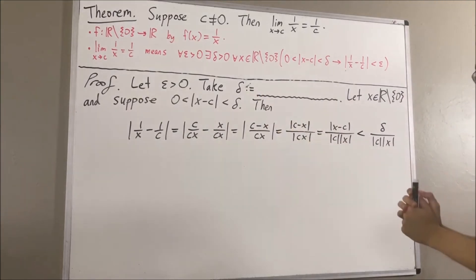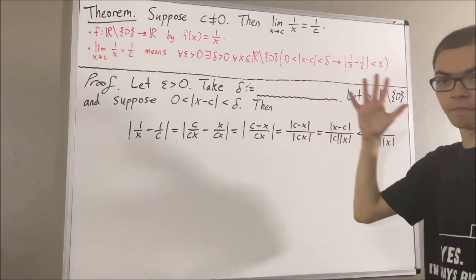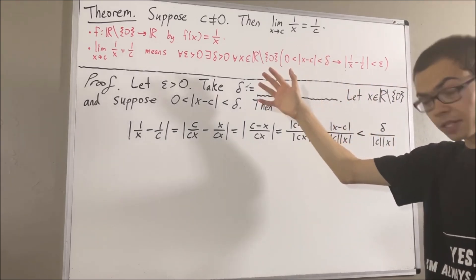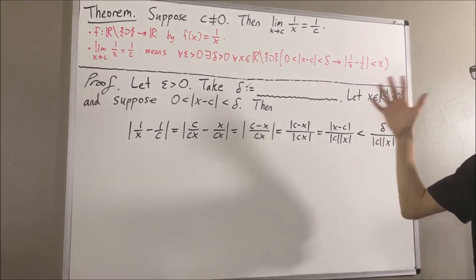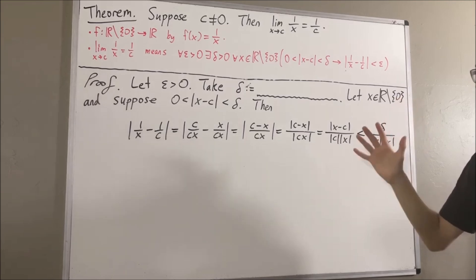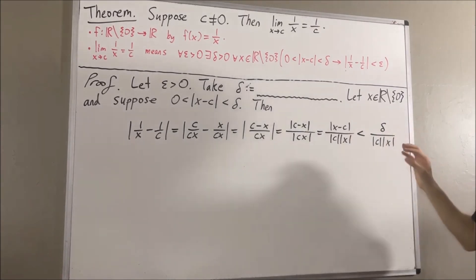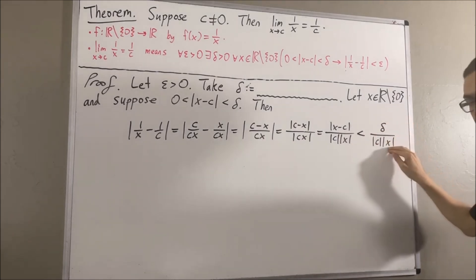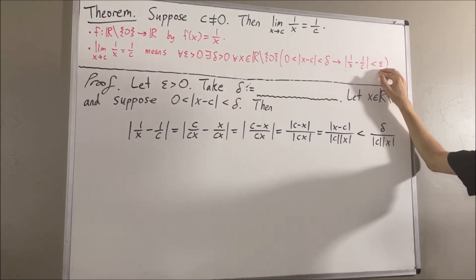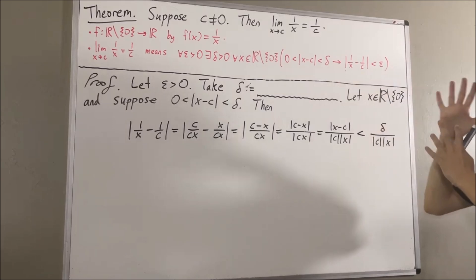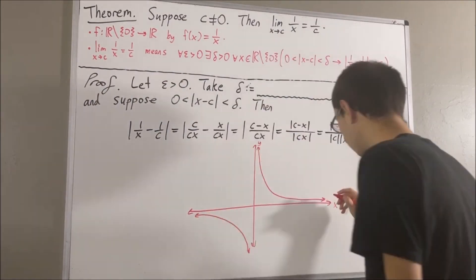A trick we can use to define delta is to define delta so that delta is the smallest number in a list of positive numbers. In other words, we're going to restrict delta so that delta is less than or equal to a list of positive numbers. So, what should be the first positive number we pick to restrict delta? Well, we're going to pick a positive number so that absolute value of x is greater than a particular value. If we can do that, then we'll be able to get rid of the absolute value of x, and that should get us closer to making this guy less than epsilon. To see which positive number we should pick, let's consider the graph of 1 over x.